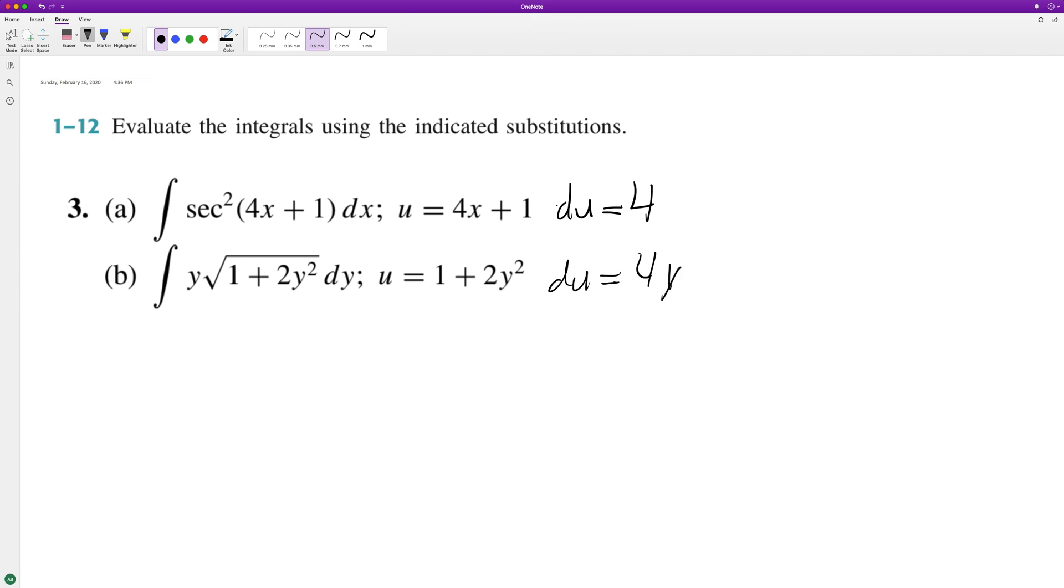For part a, to get du equal to dx here when we use u substitution, we have to multiply du by one fourth. So we have one fourth du.